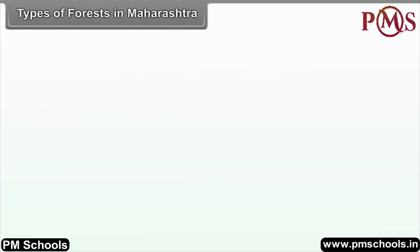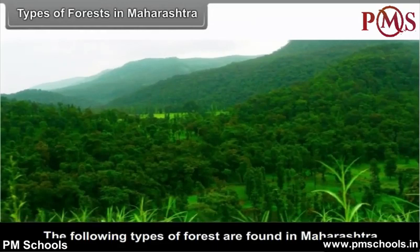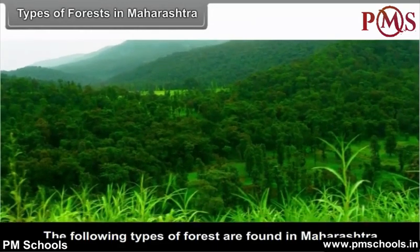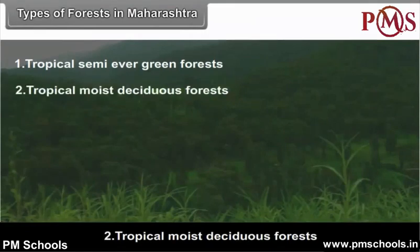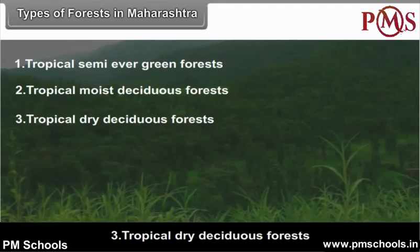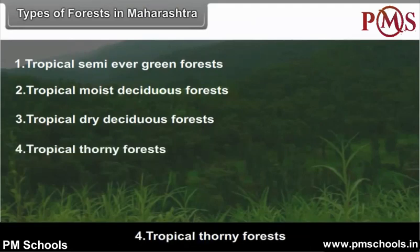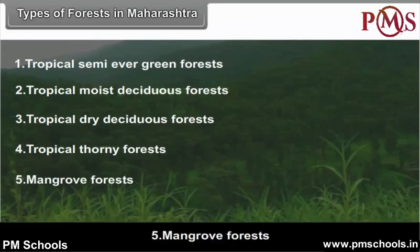Types of Forests in Maharashtra. The following types of forests are found in Maharashtra: 1. Tropical semi-evergreen forests, 2. Tropical moist deciduous forests, 3. Tropical dry deciduous forests, 4. Tropical thorny forests, 5. Mangrove forests.